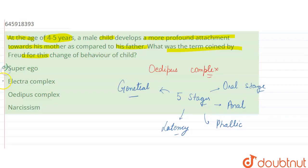Super ego, Electra complex, Oedipus complex and narcissism. So, this is option C. Thank you.